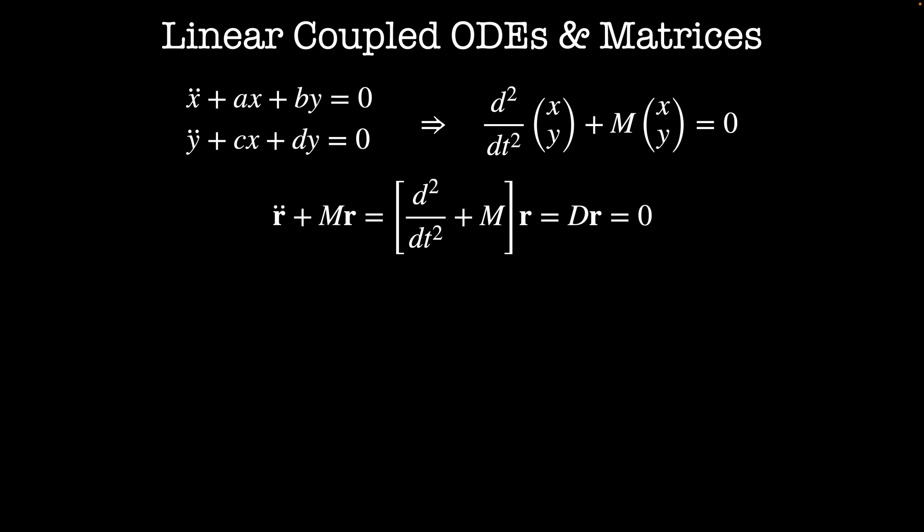This looks like a matrix equation from linear algebra. A matrix times a vector equals zero. And just like in linear algebra problems, we'll solve this by diagonalizing the operator d. This means that there is some linear combination of x's and y's, we'll call that v, that solves the equation d squared by dt squared plus lambda squared acting on v equals zero, where lambda is a constant. In fact, there are two such linear combinations. The lambdas are the eigenvalues for our operator and the v's are our eigenvectors. Here I've written v as a vector, v1 and v2, where v1 and v2 are the eigenvectors. Each of the v's are linear superpositions of the x's and y's.